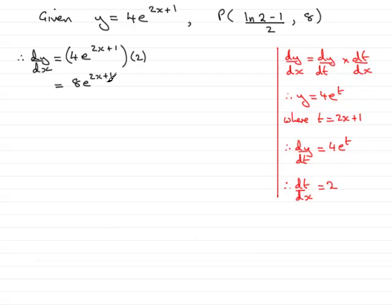So now we need to find the actual gradient at the point P. And this is when x is the natural log of 2 minus 1 over 2.